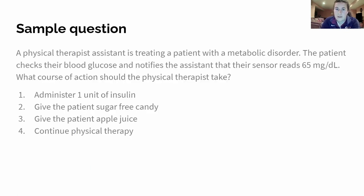Sample question: a physical therapist assistant is treating a patient with a metabolic disorder. The patient checks their blood glucose level and notifies the assistant that their sensor reads 65 milligrams per deciliter. Which course of action should the PTA take? One: administer one unit of insulin. Two: give the patient sugar-free candy. Three: give the patient apple juice.